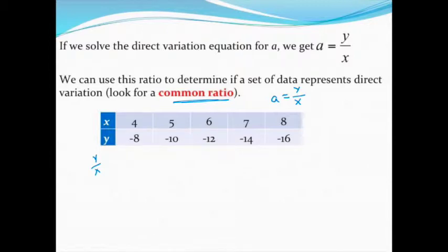So as I go through this, I can see when I divide y by x, I'm getting negative 2, and negative 2, and then I'm getting negative 2 all the way across the board. So what that is telling me is that, yes, this table does show direct variation because I have that common ratio.